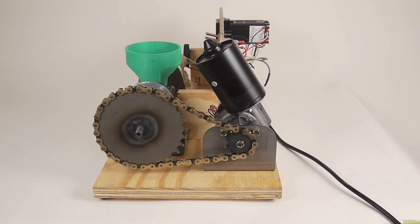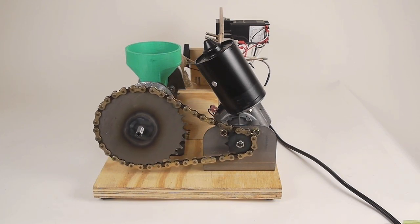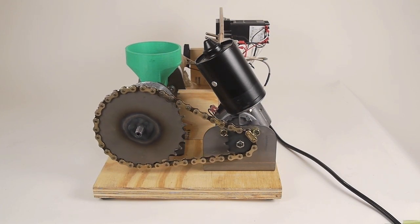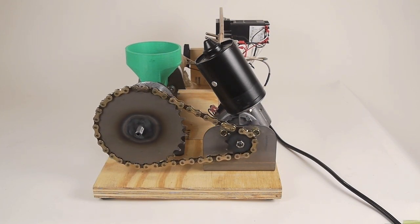The large sprocket has a hex cut specifically to drive this auger bit. There is a shaft collar welded to the other side of the sprocket to help it stay perpendicular to the auger shaft.